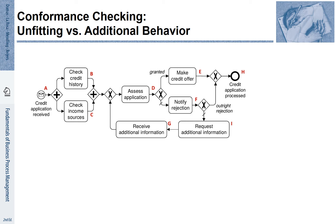After the AND join, there is an XOR join — it is the closing of a loop. We continue the process with the activity 'Assess Application,' referred to by the letter D. There is an XOR split to either grant the application or notify a rejection. If the application is granted, we make a credit offer; the letter E refers to this activity. The credit application is then processed, reaching the final event, referred to by the letter H.